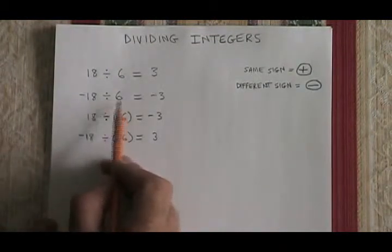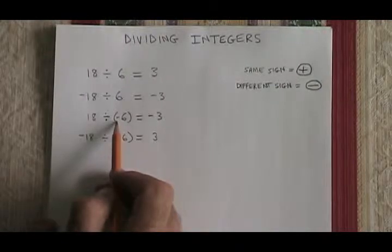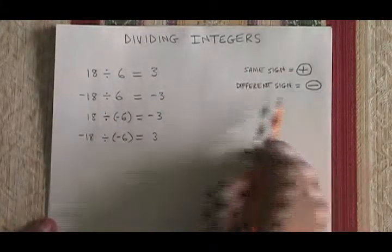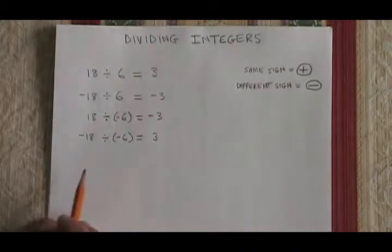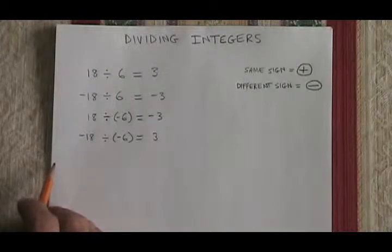If the two numbers have different signs, regardless of whether it's the first or the second one that has the negative sign, we apply the rule different sign equals negative, the answer will be negative. The number part of the answer will always be 3 because 18 divided by 6 has to be 3.